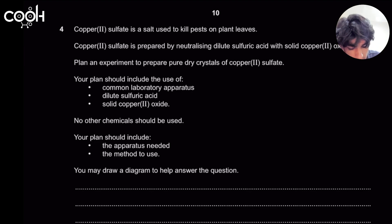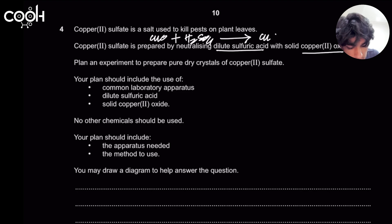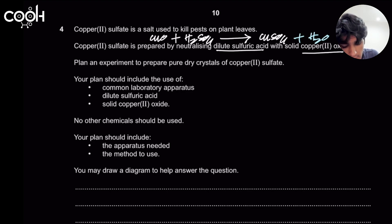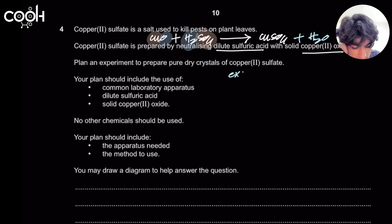To prepare copper sulfate through the excess method, copper oxide reacts with sulfuric acid in an acid-base reaction: CuO + H₂SO₄ → CuSO₄ + H₂O. The copper and sulfate form copper sulfate, while the hydrogen from the acid and the oxygen from the oxide form water. This is called the excess method.